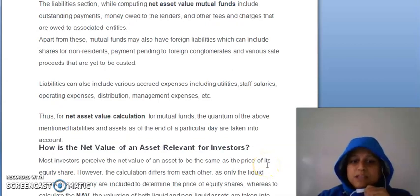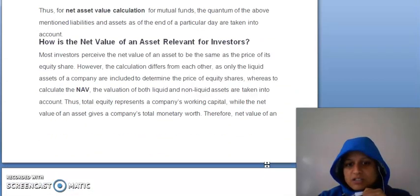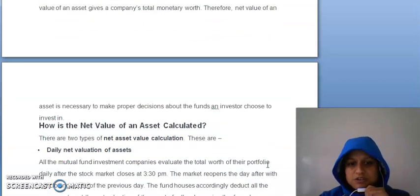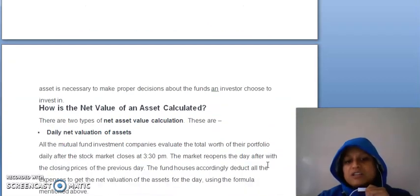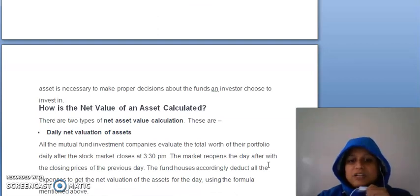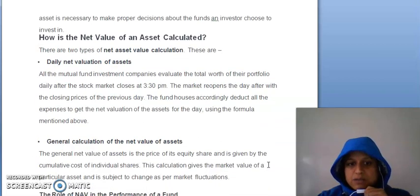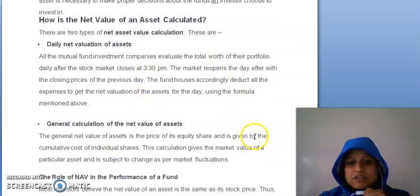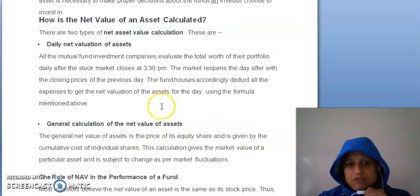Uske baad hum jo hai NAV calculate karte hain. Jo abhi humne upar formula dekha, usmein ki jahan pe aap total assets mein se total liabilities ko minus karte ho, aur usse divide karte ho outstanding number of shares se. Ab jo net value hai ek asset ki, usse calculate karne ke liye humare paas two types hain net asset value calculation ke liye. Ek hai daily net valuation of asset, aur ek hai journal calculation of the net value of asset.